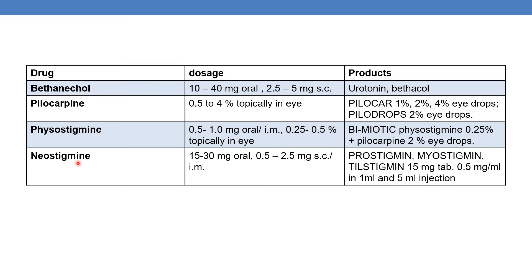Next is neostigmine. Available dosages are 15 to 30 mg oral, or 0.5 to 2.5 mg subcutaneous or intramuscular. The marketed products of neostigmine are Prostigmine, Myostigmine, and Tilstigmine, available as 15 mg tablets or 0.5 mg per ml in 1 ml and 5 ml injections.